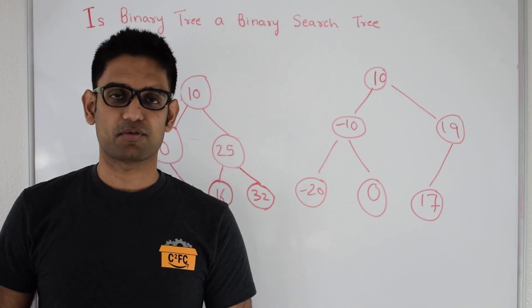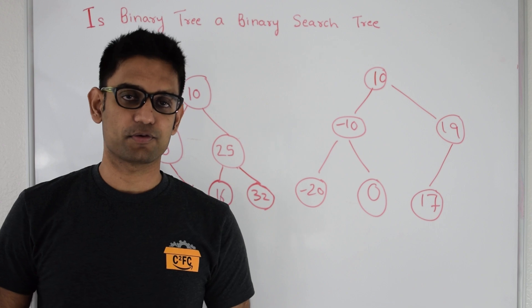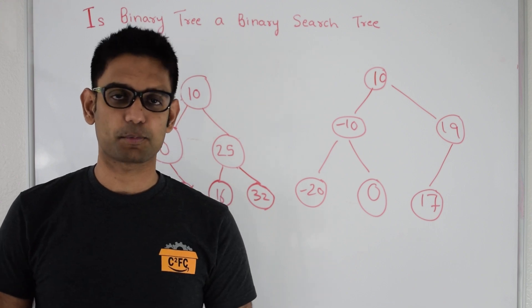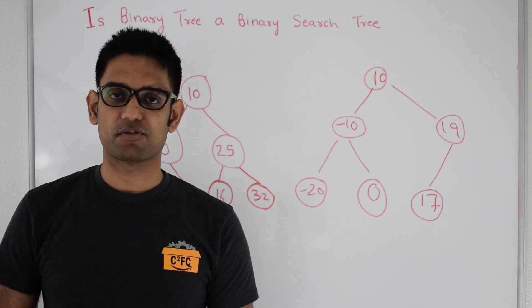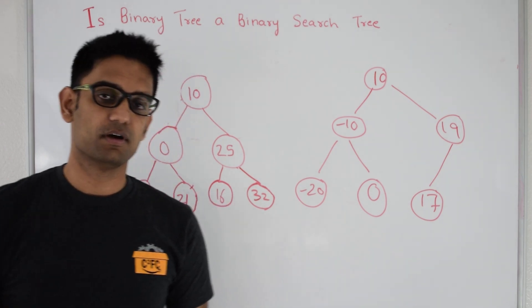A binary tree is a regular tree with 0, 1, or 2 nodes, while a binary search tree is a special kind of binary tree where left is less than root and right is greater than root.